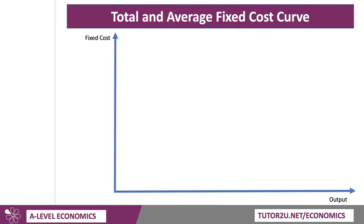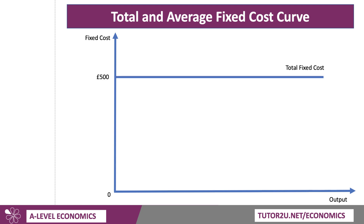Fixed costs are those costs that are independent of output, and in the short term they don't change as the level of production moves up or down. So in theory, fixed costs of a business are the same — the total fixed cost curve is just a horizontal line. Let's assume this is a small business making a particular product, and it has fixed costs of, let's say, £500 per week. So those fixed costs won't change, but our focus in this video is the shape of the average fixed cost.